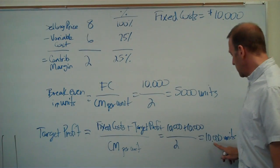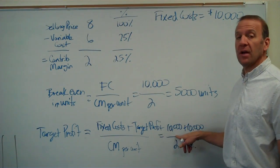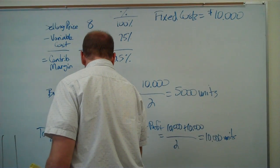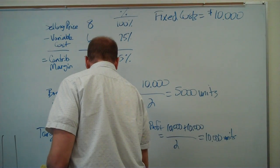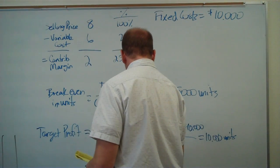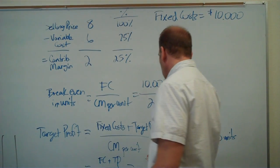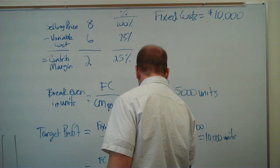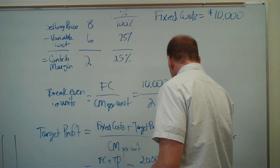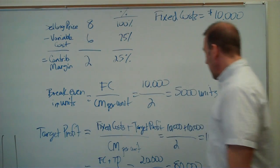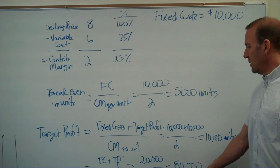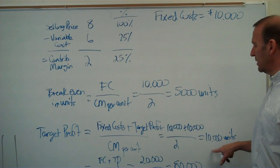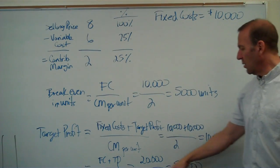Because $2 times 10,000 units is $20,000 — $10,000 of that covers fixed costs, and the other $10,000 is profit. You can do the same calculation for target profit in sales dollars: fixed costs plus target profit ($20,000) divided by the contribution margin percentage of 0.25 gives us $80,000. That's also just 10,000 units times $8.